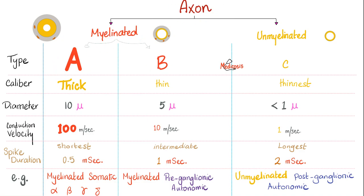Axon caliber: type A is the thickest (~10 µm), type B is thin (~5 µm), type C is the thinnest (<1 µm). Conduction velocity: type A is ~100 m/s, type B is ~10 m/s, type C is ~1 m/s. So diameter and velocity both follow the pattern: 10, 5, 1 and 100, 10, 1.